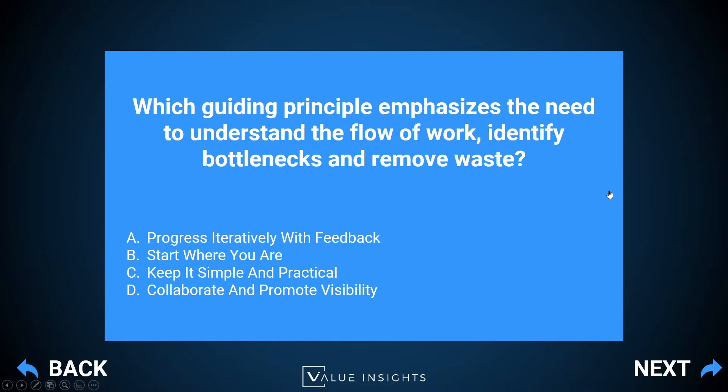Option A — progress iteratively with feedback — is one of the guiding principles but is more about baby steps and continual feedback from stakeholders. Option B — start where you are — is all about utilizing what is already in place instead of building or buying everything from zero, so we can recycle things that can still be used. Option C — keep it simple and practical — speaks for itself: we shouldn't overdo things or gold-plate; we should deliver what the customer requires and neither overachieve nor underachieve. But the correct answer for this question is collaborate and promote visibility.